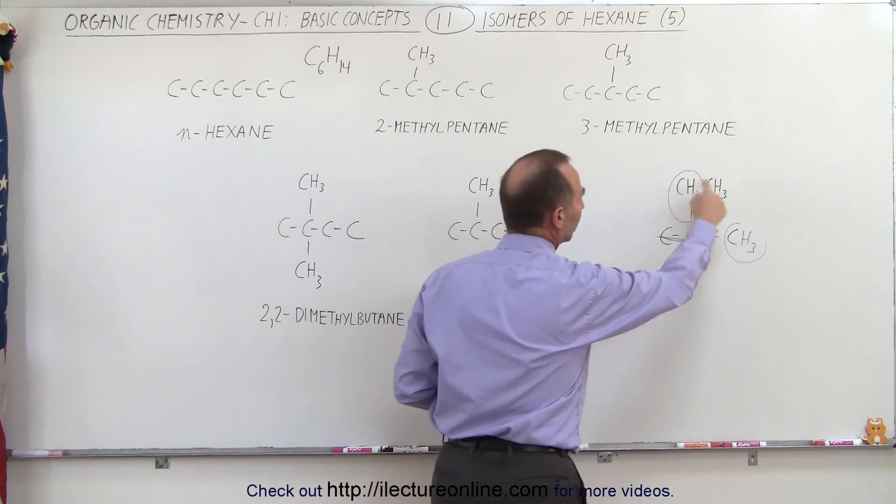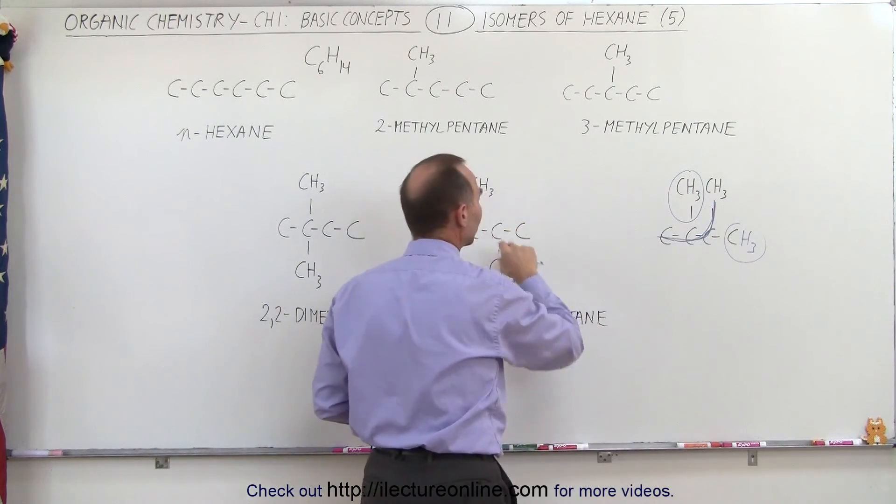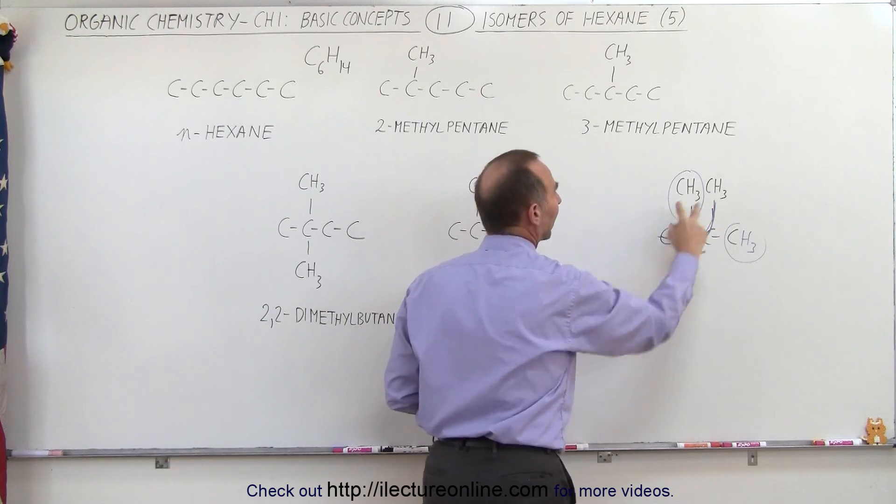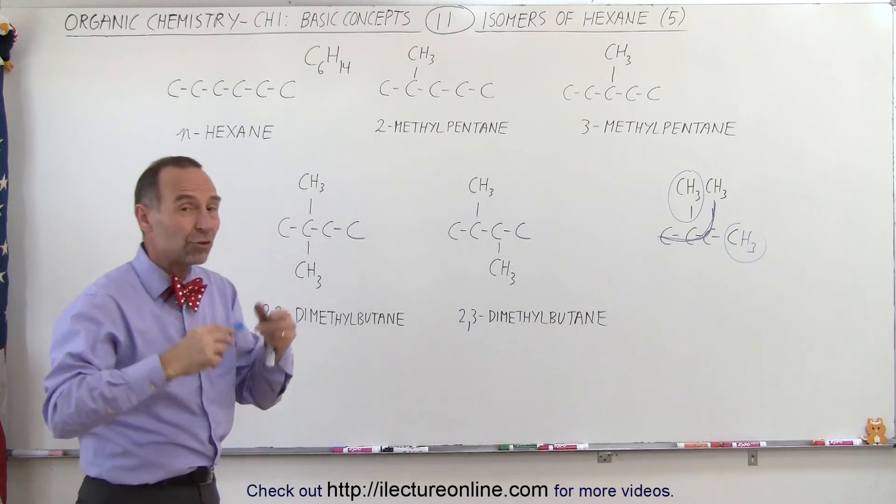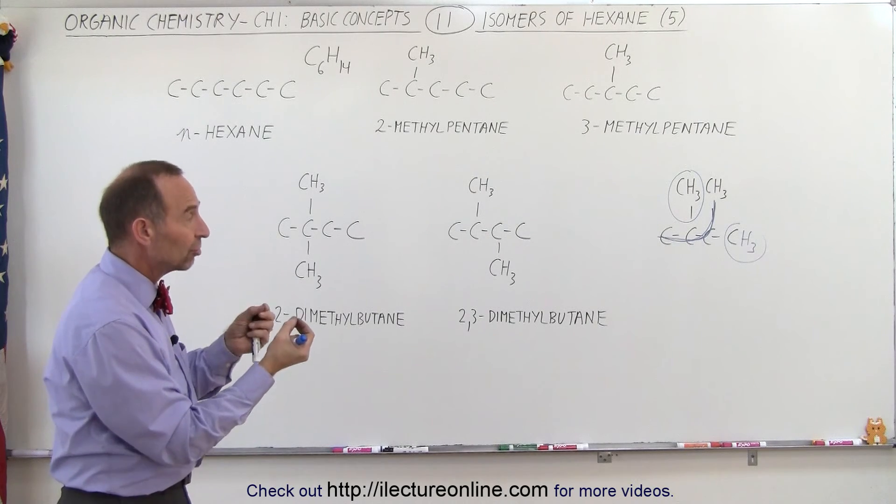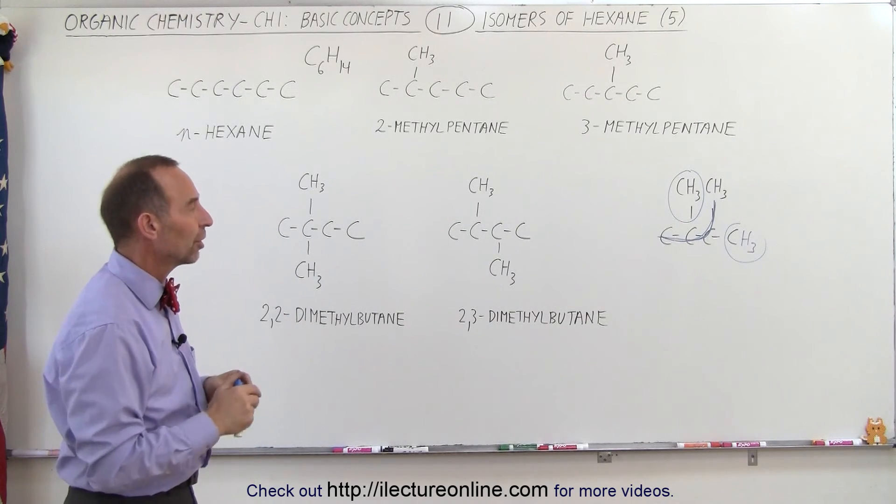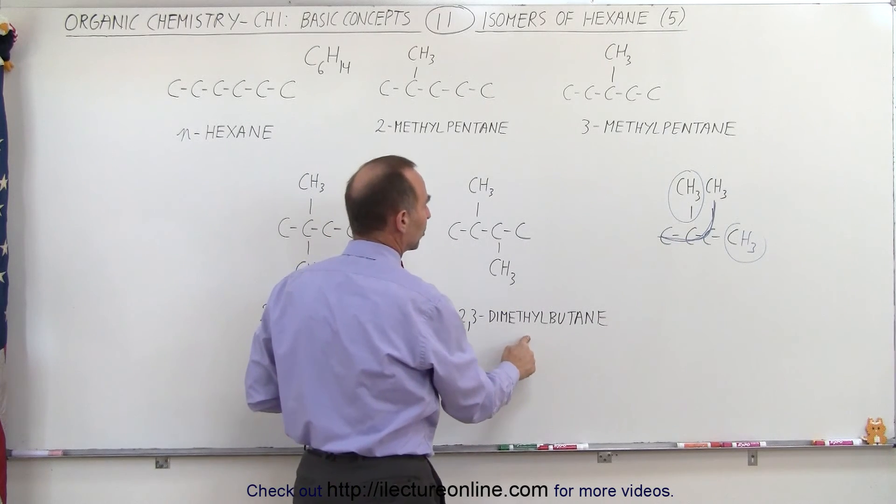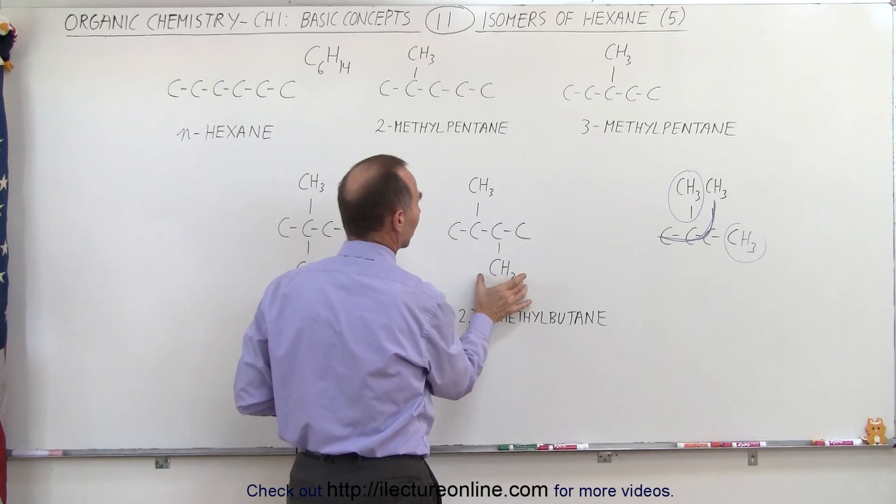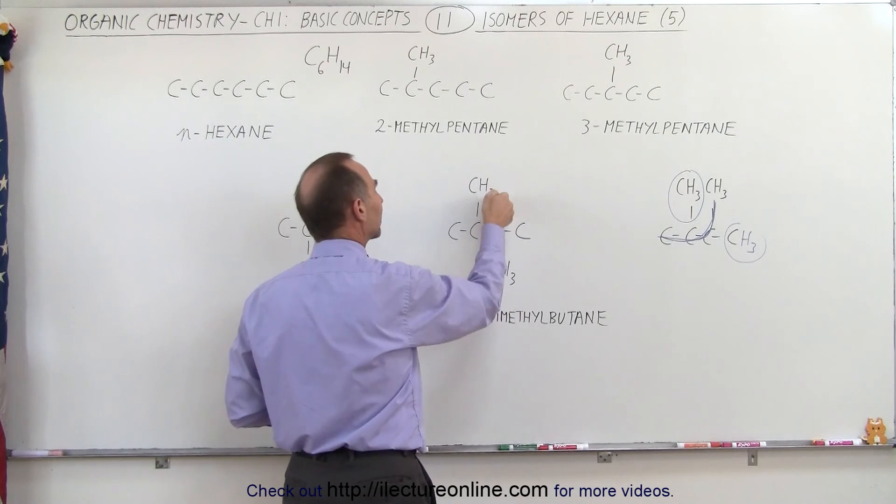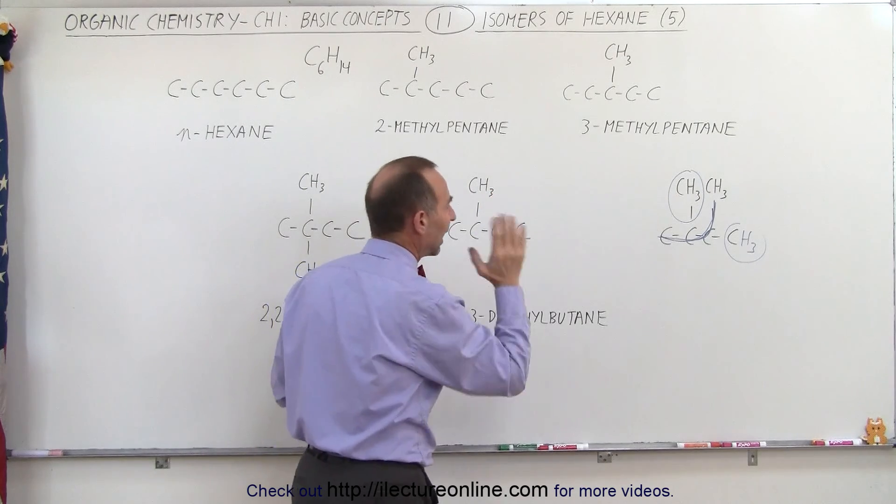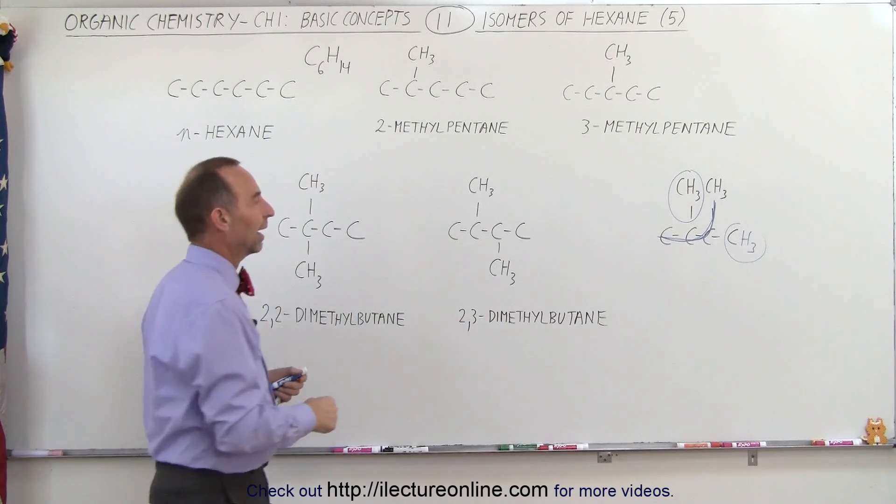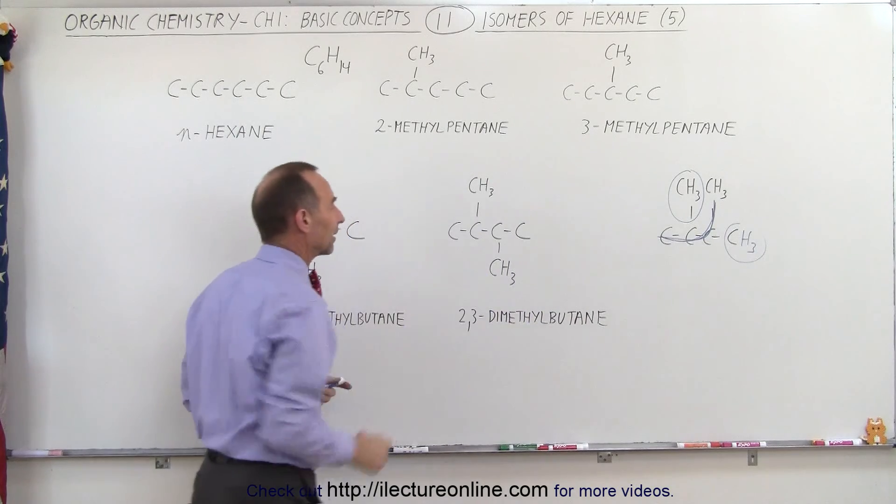So this would look no different than this if we had connected both of them like that. It looks different because the way we draw things on the board, but actually, structurally, it would not look different at all, and therefore it would be exactly the same as 2,3-dimethylbutane. Even if we took this methyl group and connected it to the carbon like this, we'd have the exact same structure as we do when we connected like this.